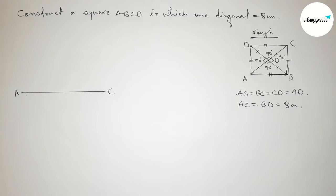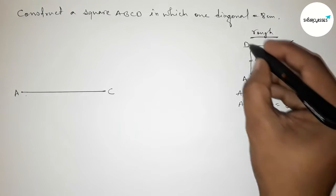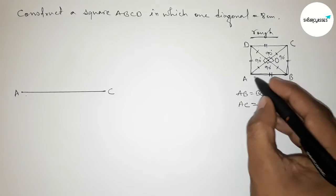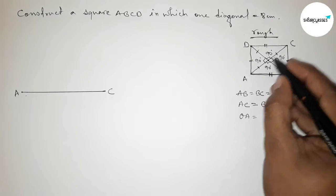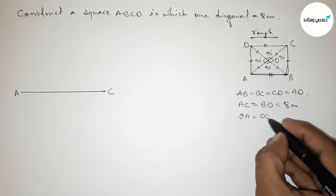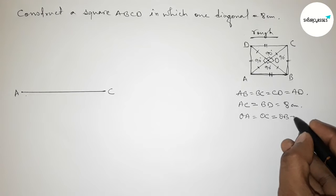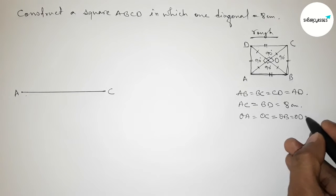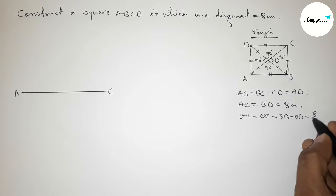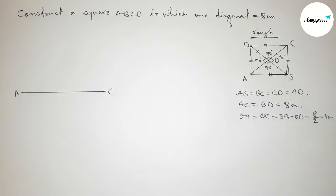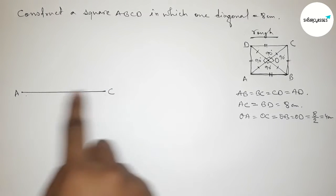The two diagonals bisect each other equally, so the length OA equals OC equals OD equals 8 divided by 2, which is 4 centimeters. Now first we have to bisect the line AC perpendicularly.